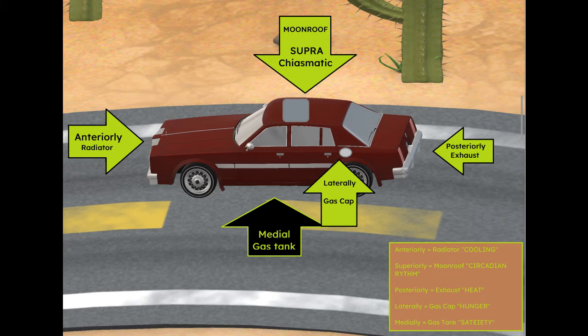The anterior is where the radiator is located on the car, and that is involved in cooling the engine. On the very top of the car we have the moon roof, and if you're looking up at the moon then it must be nighttime, so the moon roof — the suprachiasmatic nucleus — is used in managing the circadian rhythm.